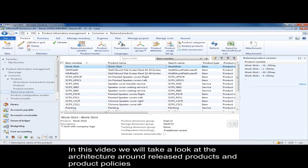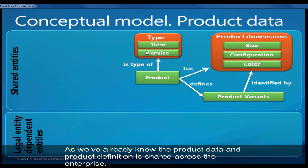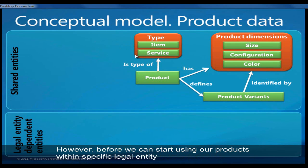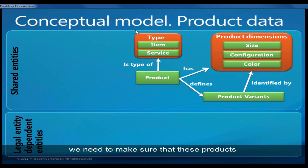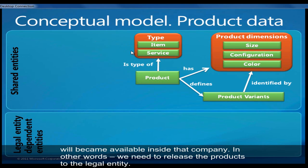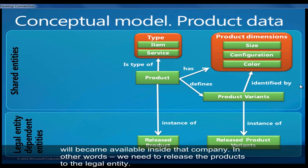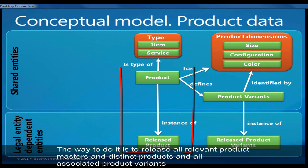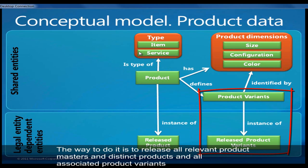In this video we will take a look at the architecture around released products and product policies inside Dynamics AX 2012. As we already know, the product data and the product definition is shared across our enterprise. However, before we can start using our products within a specific legal entity, we need to make sure that these products will become available within that company. In other words, we need to release the products to the legal entity by releasing all relevant product masters, existing products, and all associated product variants.